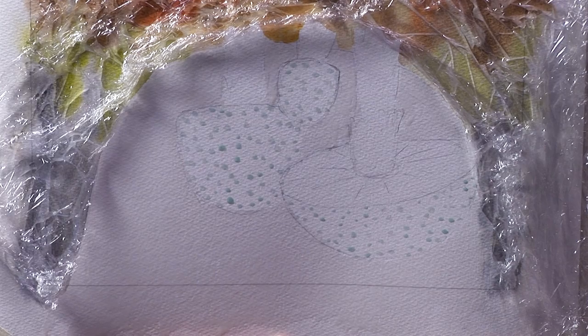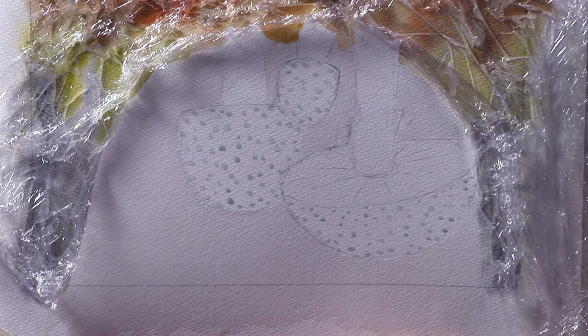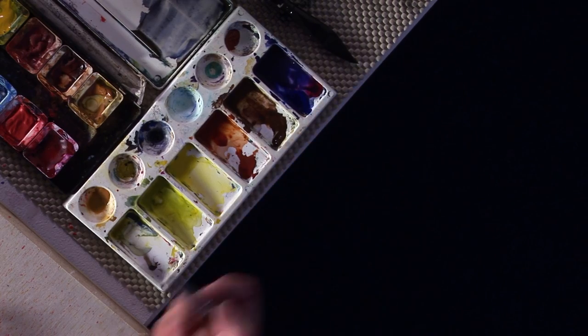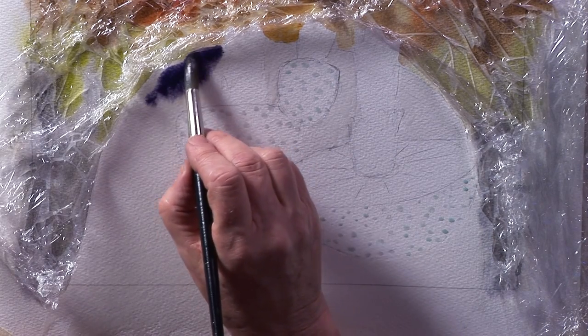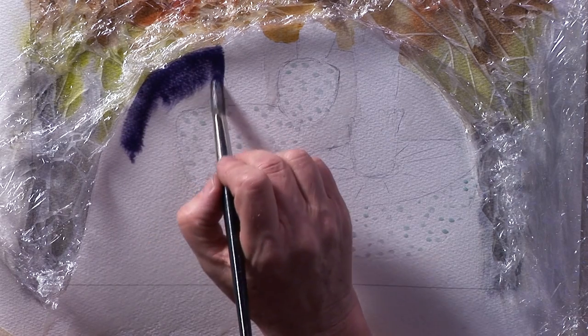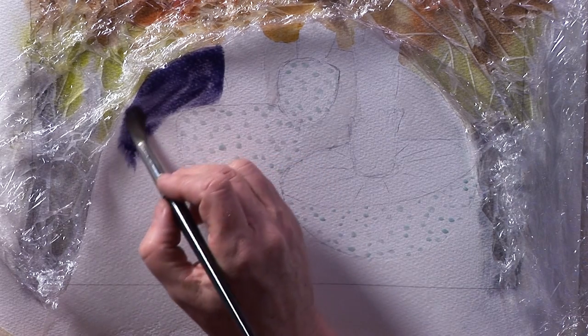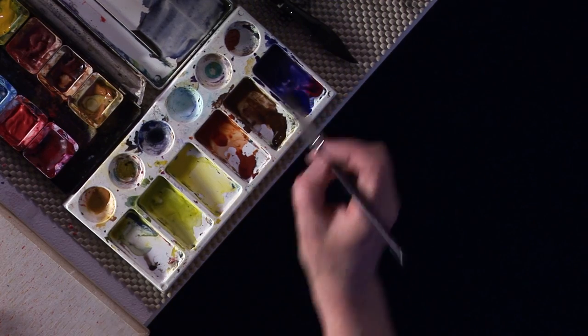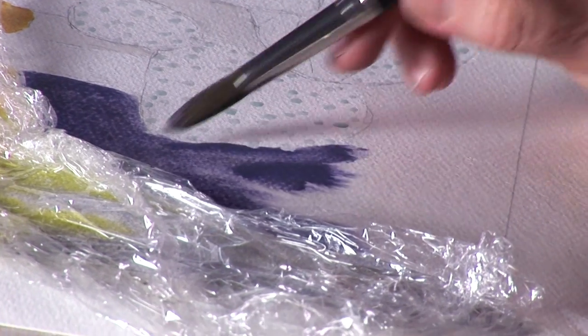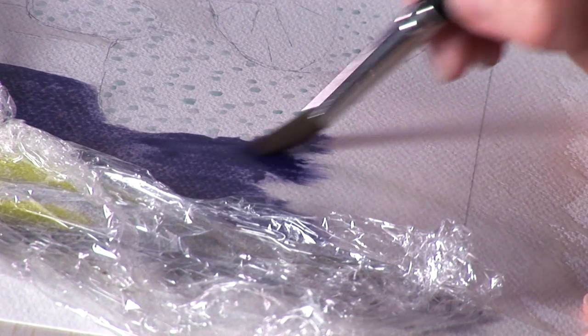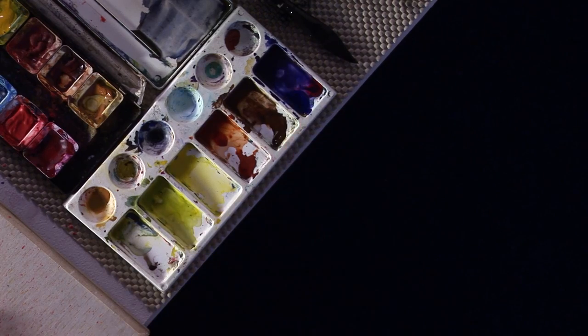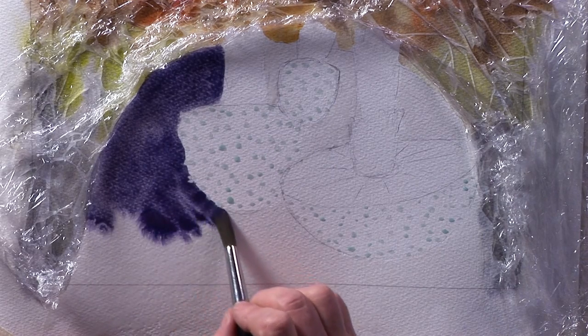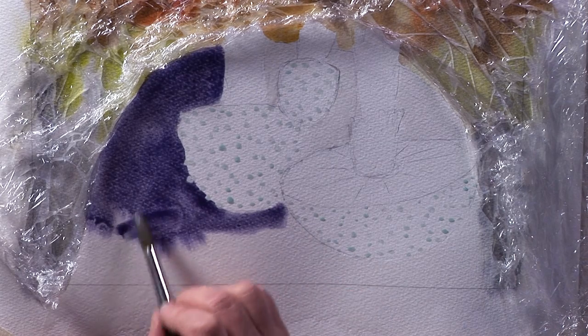Right so now that's all nice and glossy wet again into the paint mix nice and strong with that one. We're going to start from the top carefully putting that paint in around the edges up around the sides of the little toadstools here bringing it across. If it's nice and wet like this it should all blend and flow together to give you a smooth finished wash.